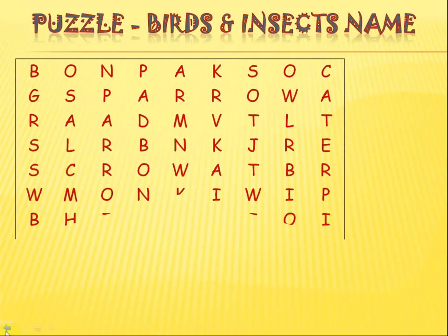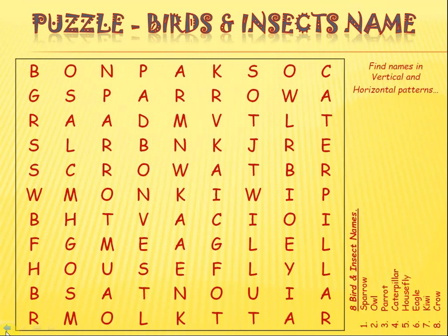Now we move to the next type of question, which is a puzzle. In this puzzle, there are birds and insects names hidden in a vertical or horizontal pattern. Let the kid find out the names by themselves. But in case they find it difficult, they can refer to the names of the birds and insects given on the bottom right corner.